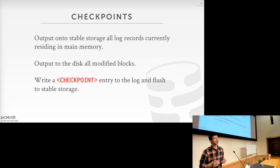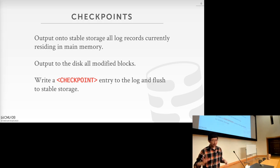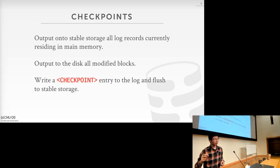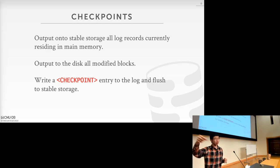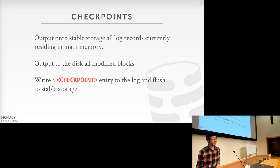When doing a checkpoint, at a high level you do three steps. First, you write all your logs currently in your write-ahead log buffer onto disk. Then you write all the dirty pages in your buffer pool onto disk as well. This order is important — just as when generating logs and modifying database content, we always need to generate log records first before modifying pages in the buffer pool. You write all the log records first, then write all the contents in the buffer pool. Lastly, you write a checkpoint entry to the log record and flush it.